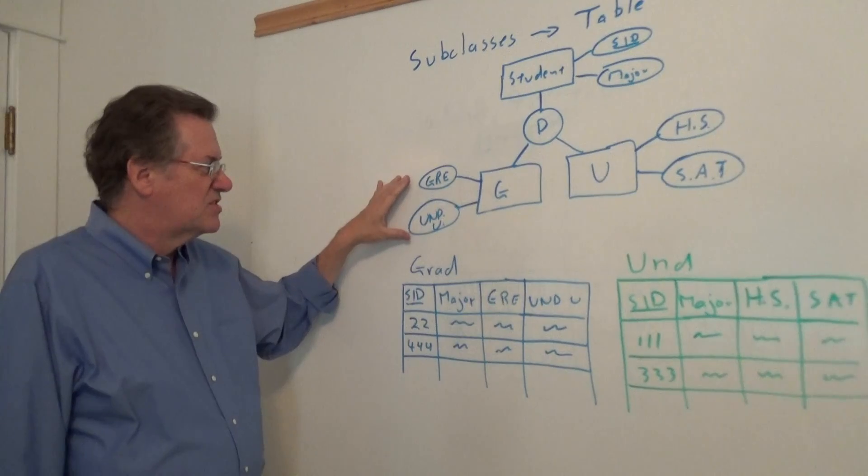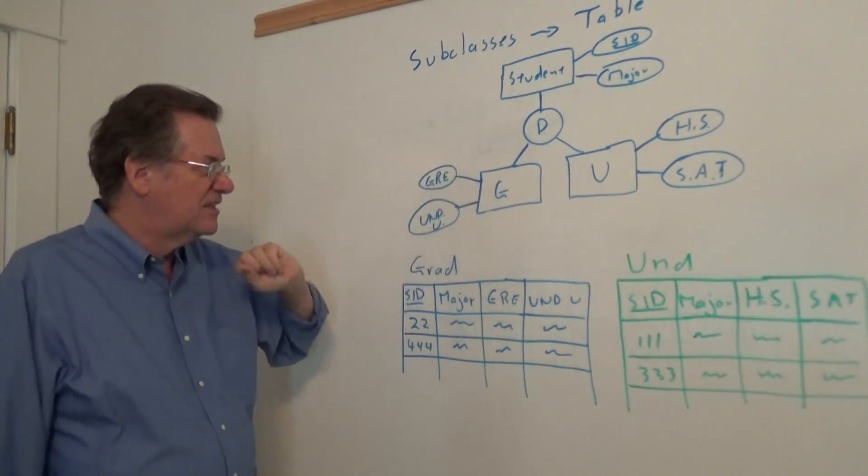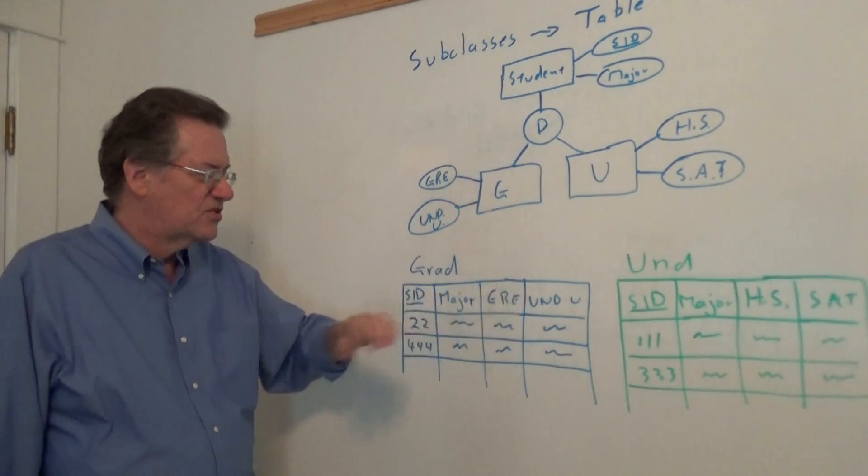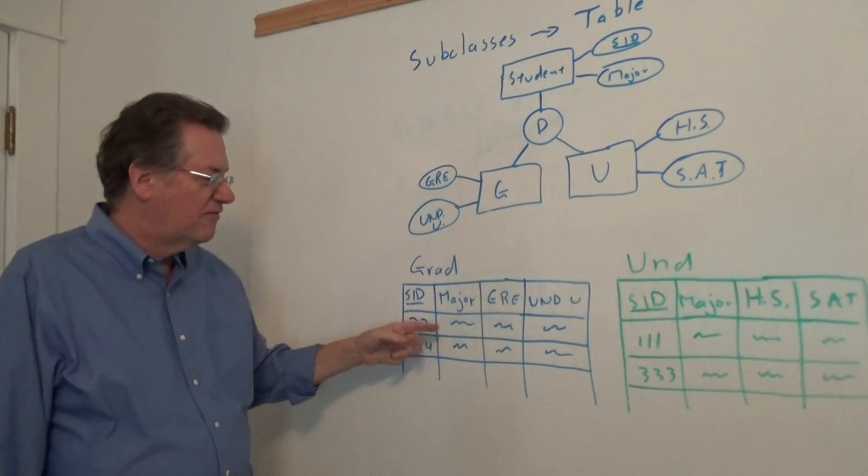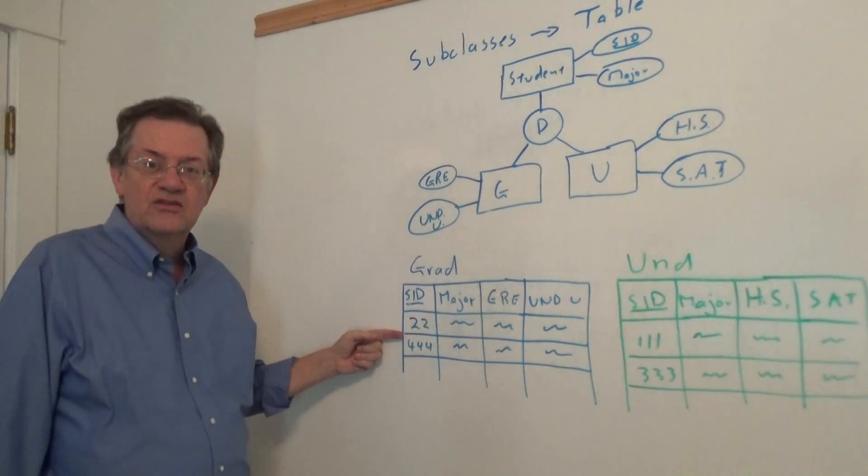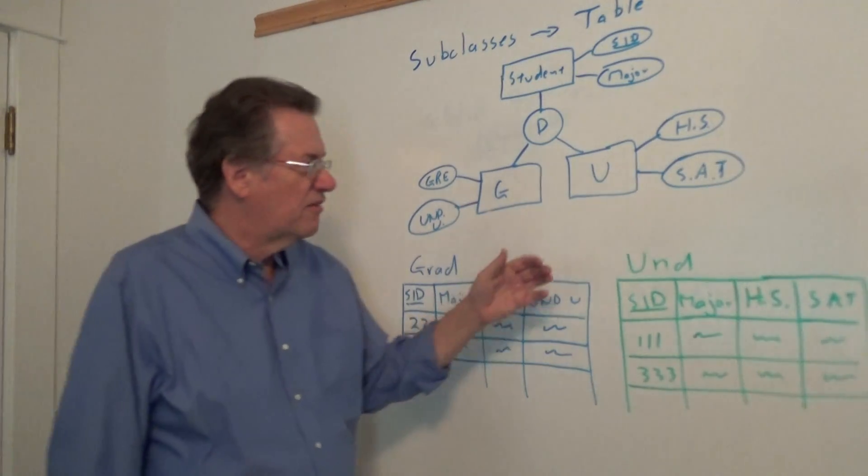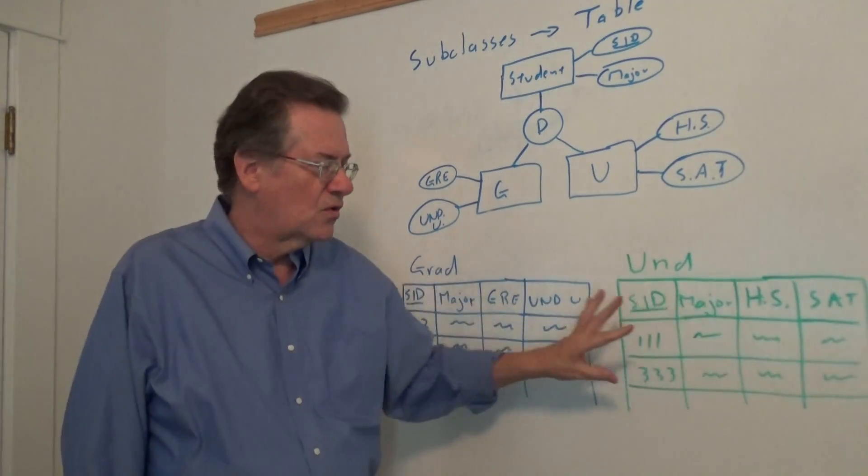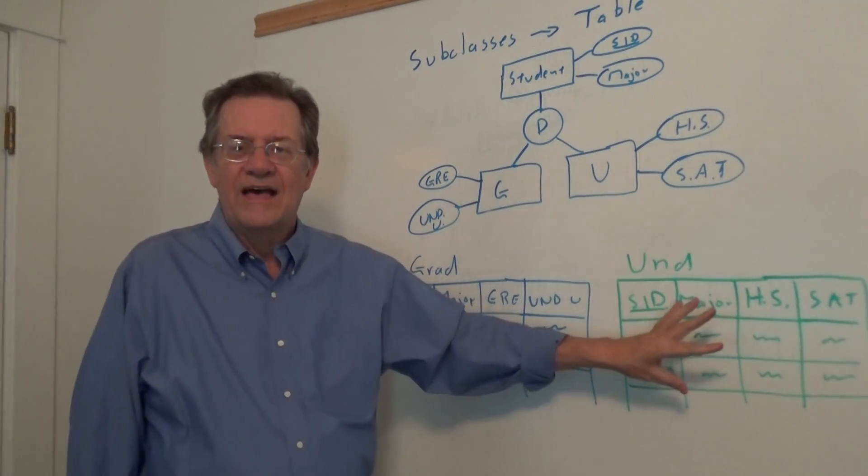Now we said that the graduate student has certain attributes not found in the undergraduate such as GRE and undergraduate institution, and so we'd have no null values and here's two student records, graduate student records. Likewise for the undergraduate we would have high school and SAT score, no null values there.